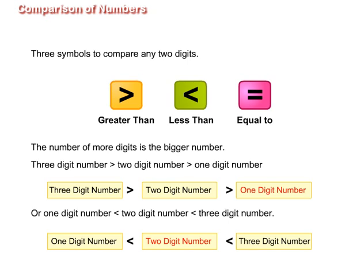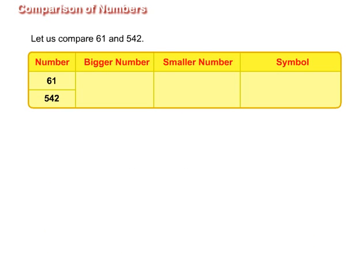A two-digit number is less than a three-digit number. Let us compare 61 and 542. 542 has three digits and 61 has two digits. Therefore, 61 is less than 542, or 542 is greater than 61.